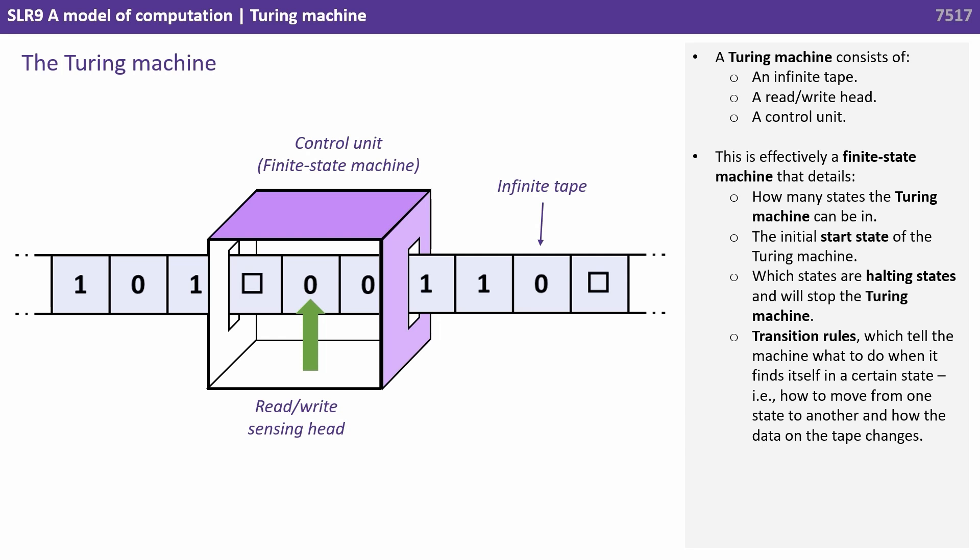It consists of a control unit. This is effectively a finite state machine that details how many states the Turing machine can be in, the initial start state of the Turing machine, which states are halt states that will stop the Turing machine, and a set of transition rules which tell the machine what to do when it finds itself in a certain state, i.e. how to move from one state to another, and how the data on the tape changes.